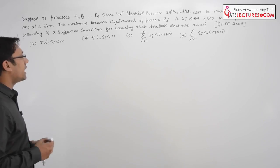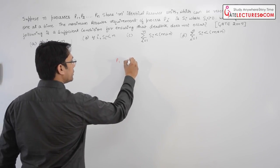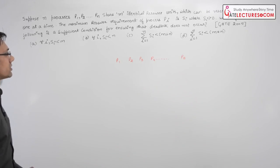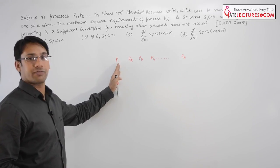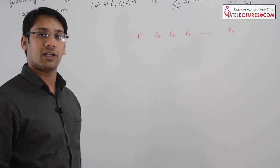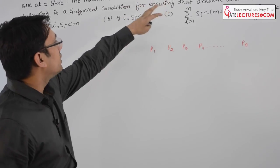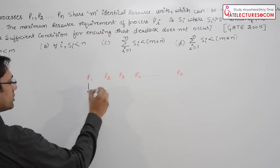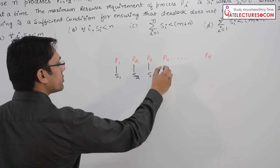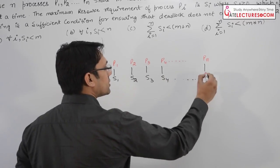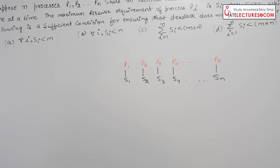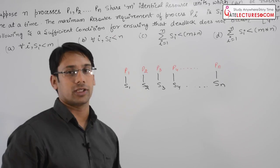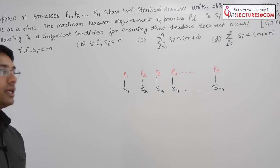We have n processes: P1, P2, P3, P4, up to Pn. We can represent every process as Pi where i goes from 1 to n. Each process Pi has a requirement Si — so process P1 requires S1 resources, P2 requires S2, P3 requires S3, up to Pn requiring Sn resources. The question asks: which condition is sufficient for ensuring that deadlock does not occur?